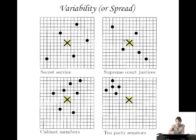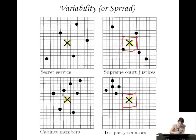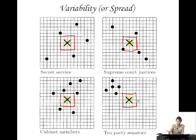Another way of looking at it is maybe creating a little boundary and saying how many people are in that boundary. So maybe we have a little square around the president and we just look at how many people are in that square. If that was our measure, we would say this group is the closest to the president — here we have like one person in the square and none of the other groups have any people in the square.